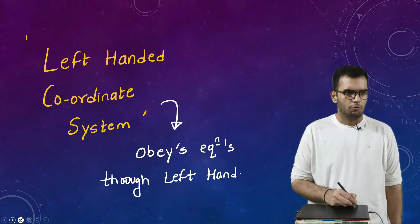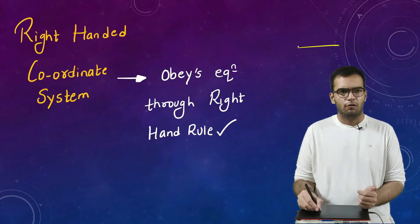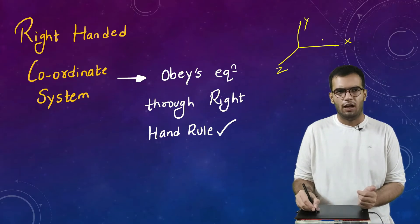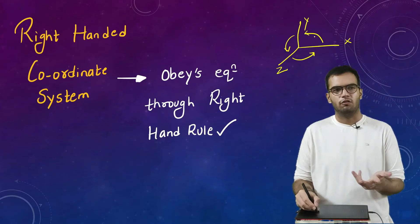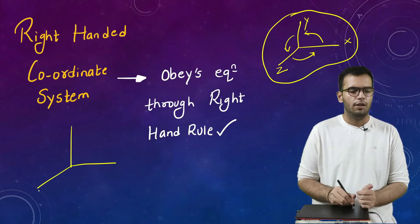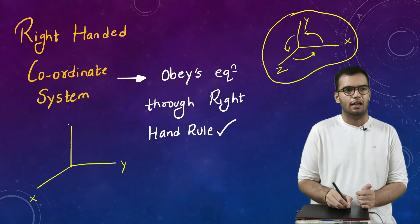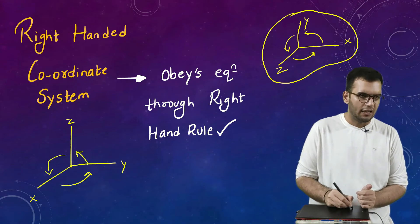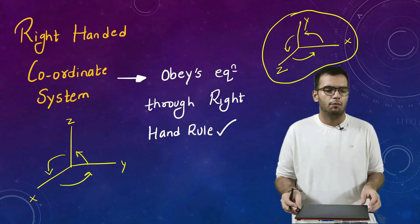For example, take this graph: this is my x, this is my y, this is my z. I am going in the anti-clockwise direction, so yes, this is a right-handed system. Taking another example — drawing x, y, and z in this way — this is also correct and follows the right-hand thumb rule since I am going in the anti-clockwise sense.